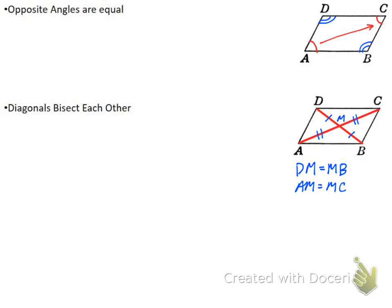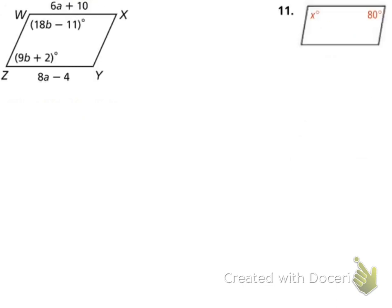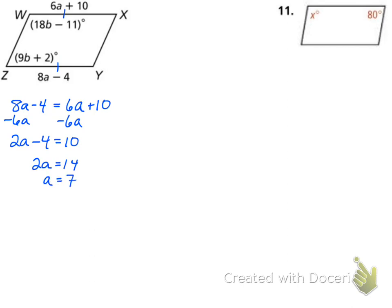With the rest of the problems, we can write equations and solve to find our variables. With the first problem on the bottom left, the easiest is that 6A plus 10 is the top and 8A minus 4 is the bottom. Opposite sides are equal, so 8A minus 4 equals 6A plus 10. Subtract 6A: 2A minus 4 equals 10. Add 4: 2A equals 14, so A equals 7. Plugging back in: 6 times 7 plus 10 equals 52, so both sides equal 52.